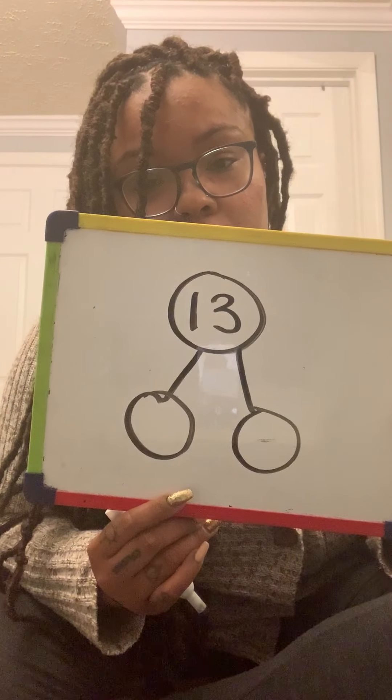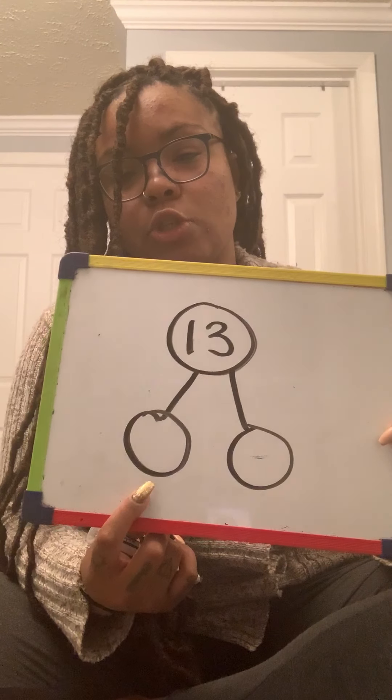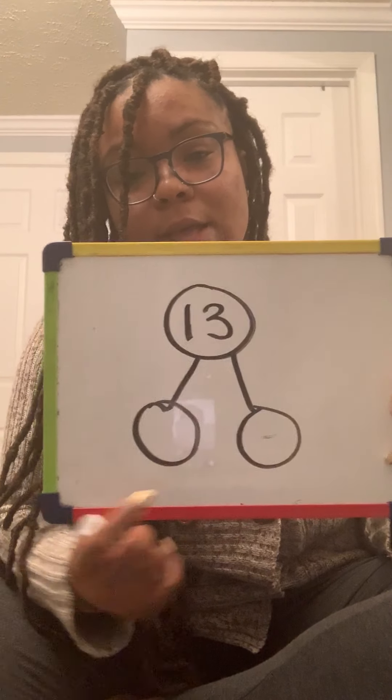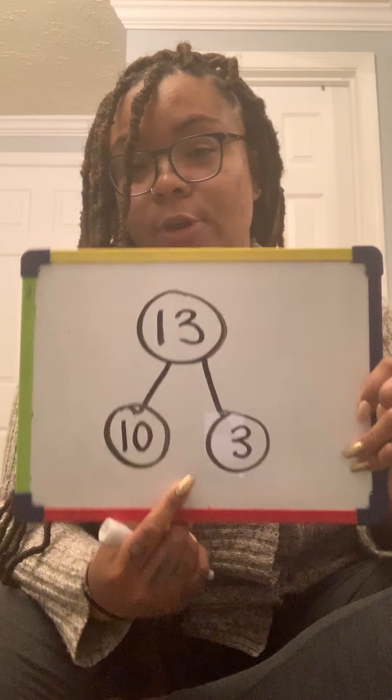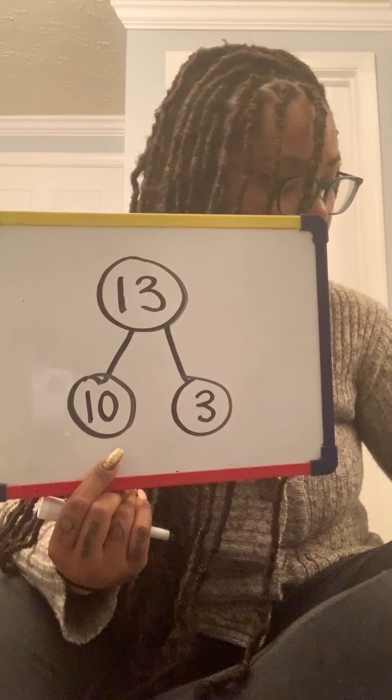Our first number that I want you guys to figure out is 13. I'm going to give you 5 seconds to try to figure out the 2 parts that go in 13. Remember, it has to be 10s and 1s. 3, 2, 1. In 13, there is 1 ten and 3 ones. All right, let's do another one.